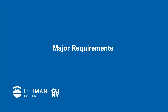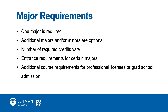Another category of requirements are the courses required toward your declared major. To earn your bachelor's degree, you must declare and complete one major. You have the option to declare and complete additional majors and or minors if you so choose. The number of credits required to complete your major depends on which major you've declared. There is a very big range, with majors requiring anywhere from as few as 27 credits to as many as 80 credits for completion. The more credits your major requires, the less room you'll have in your academic program for elective credits, and vice versa.